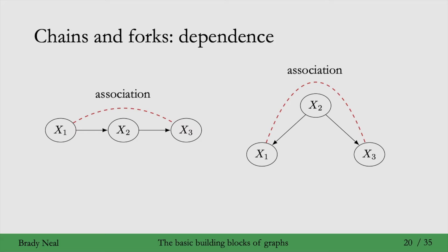So in both chains and forks, x1 and x3 are dependent. Another way of talking about that is that association flows along these paths between x1 and x3, or x3 and x1.